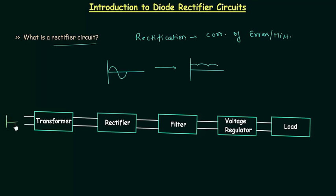AC supply is given to the transformer with rated frequency. In India and neighboring countries the rated frequency is 50 Hz, and in the USA the rated frequency is 60 Hz. The transformer is used to bring the level of AC voltage to a desired value. If you want to increase the level of input AC voltage you can use a step-up transformer, and this transformer can also be used as step-down.